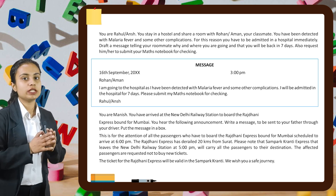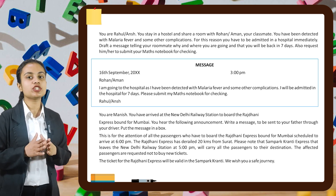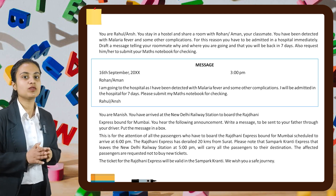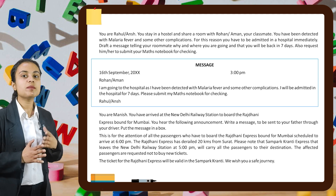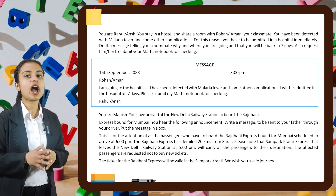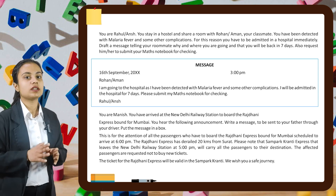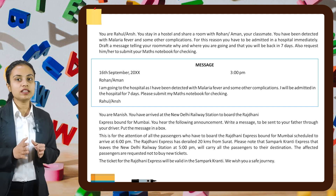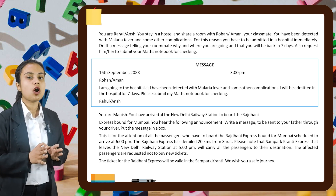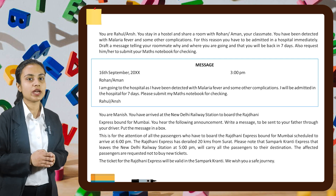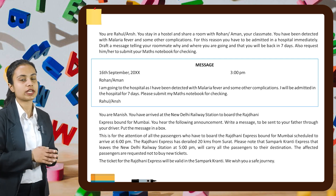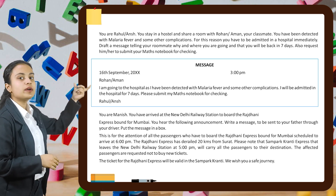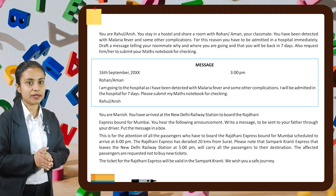You are Rahul or Ansh. You stay in a hostel and share a room with Rohan or Aman, your classmate. You have been detected with malaria fever and some other complications. For this reason, you have to be admitted in a hospital immediately. Draft a message telling your roommate why and where you are going and that you will be back in 7 days. Also request him or her to submit your maths notebook for checking. We start with a box, writing 'MESSAGE' in capital letters in the middle of the top line.